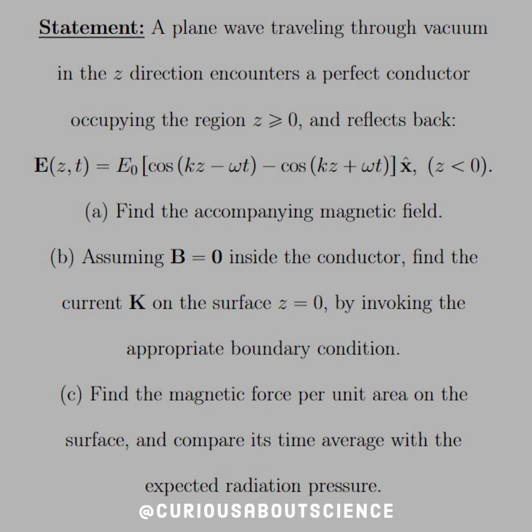E of z of t is equal to e naught cosine kz minus omega t minus cosine kz plus omega t in x-hat direction. For z less than 0, (a) Find the accompanying magnetic field, (b) Assume B equals 0 inside the conductor and find the current K on the surface z equals 0 by invoking the appropriate boundary conditions. (c) Find the magnetic force per unit area on the surface and compare its time average with the expected radiation pressure.